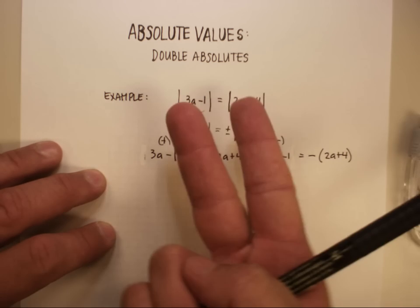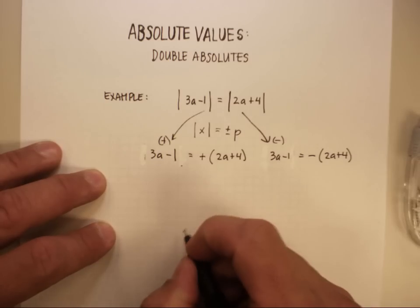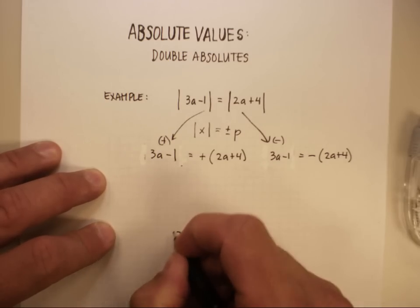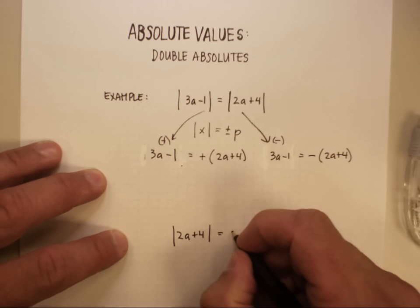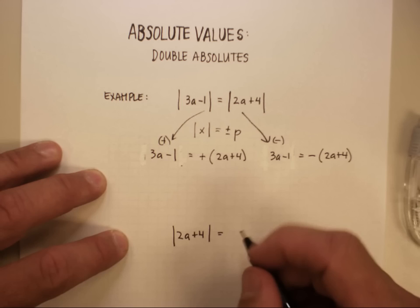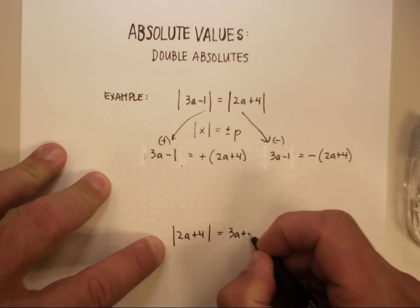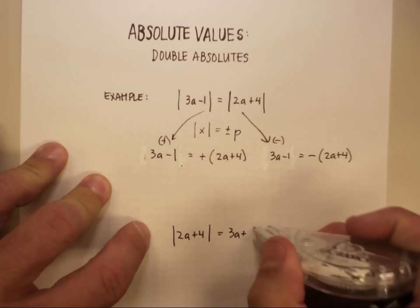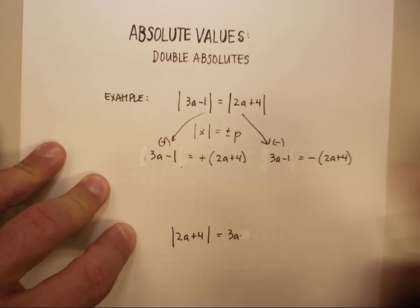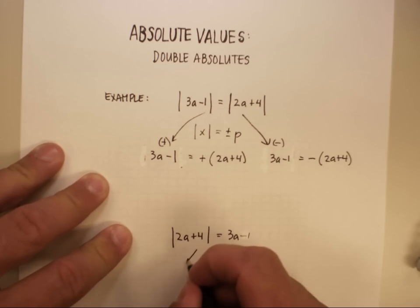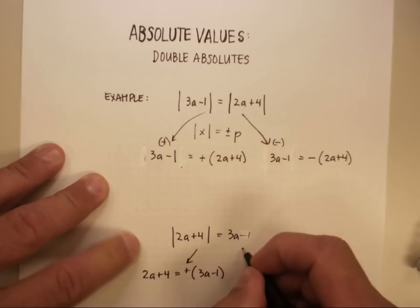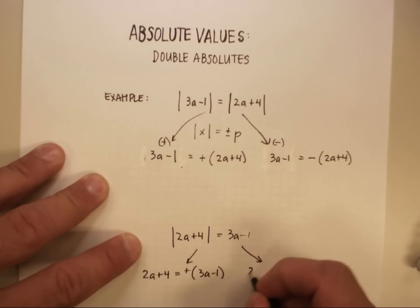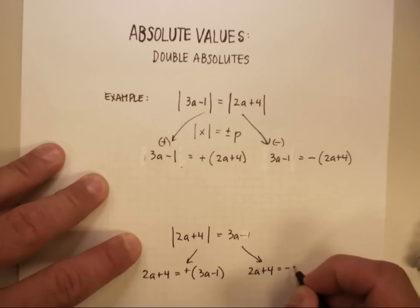But what if we went ahead and flipped these sideways, right? What if I said 2a plus 4, the absolute value of that, is equal to the positive and negative case of this? 3a minus 1, 3a minus 1. Well then I would do this. I would say the positive case is 2a plus 4 is equal to the positive case, or 2a plus 4 is equal to the negative case.